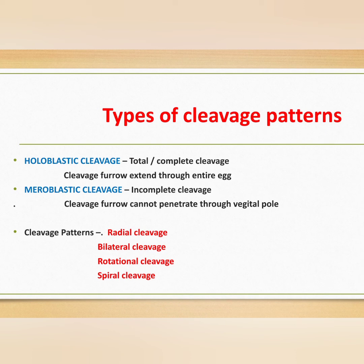There are mainly two types of cleavage: holoblastic cleavage and meroblastic cleavage. Holoblastic cleavage is complete cleavage, and meroblastic cleavage is incomplete cleavage. In holoblastic cleavage, the cleavage furrow extends through the entire egg. In meroblastic cleavage, the cleavage furrow cannot penetrate through the yolk-rich vegetal region. The patterns may be radial, bilateral, rotational, or spiral cleavage.